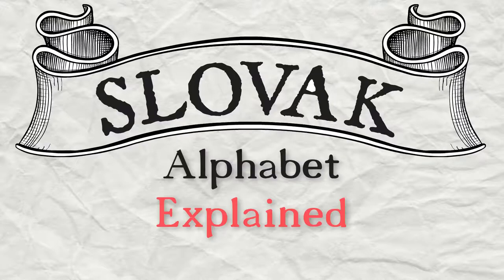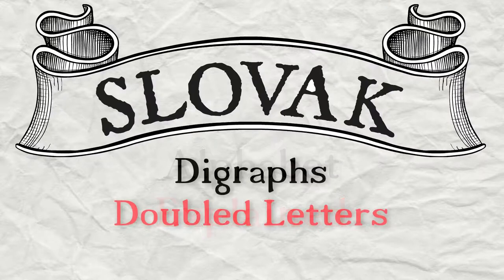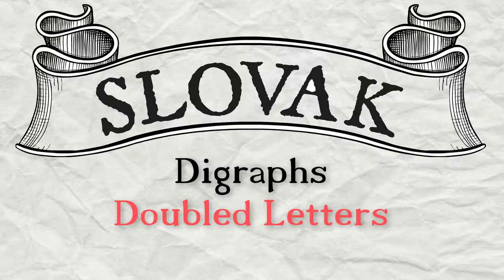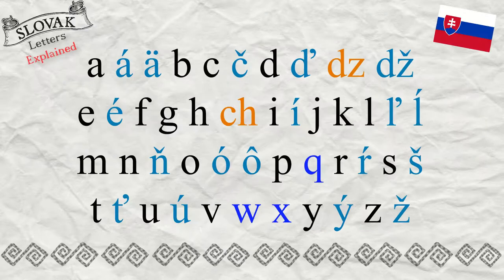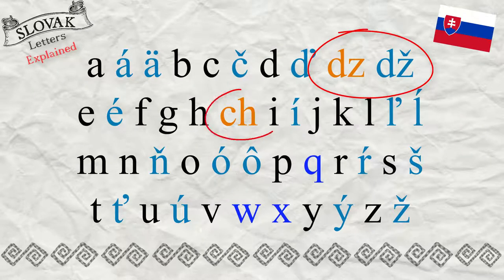Slovak alphabet explained. The digraphs in the Slovak alphabet — DZ, DŽ, and CH — are represented by two letters but are pronounced as one sound.